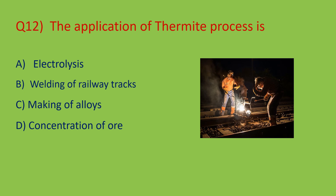Question number twelve: the application of the thermite process. In the thermite process, it is a displacement reaction with liberation of a huge amount of heat energy. This heat turns the metal into a molten state, which is used for welding. The main application is welding of railway tracks and repairing industrial equipment. You can see people welding railway tracks using the thermite process. Option B is the right answer.